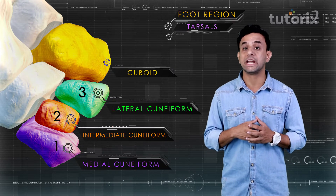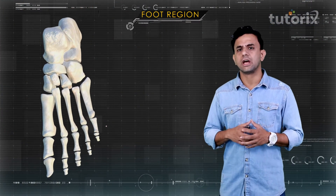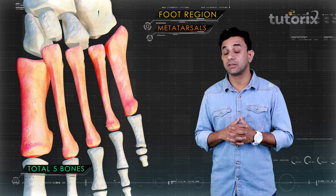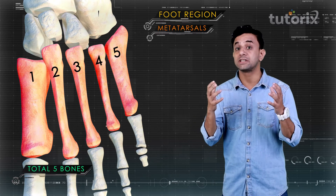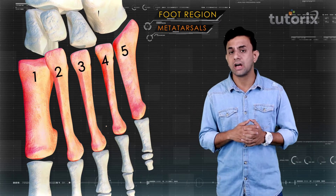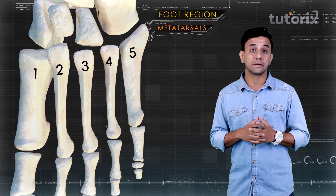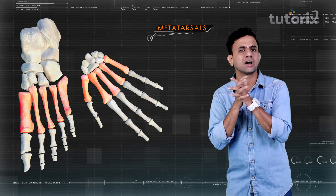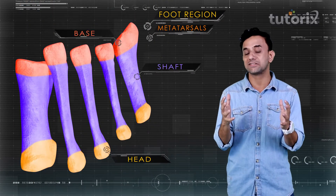The metatarsal bones are five in number and are present in the metatarsus region, which is the intermediate region of the foot. They are numbered one to five from the medial to the lateral end. Like the bones of the palm of the hand, each metatarsal bone consists of three parts: the proximal base, the intermediate shaft, and the distal head.